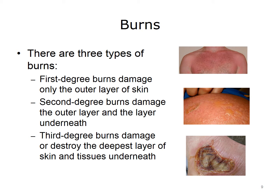Third degree burns damage or destroy the deepest layer of skin and tissues underneath. These burns are also called full thickness burns, since they involve all three layers of skin — epidermis, dermis, and fat layer. Usually the sweat glands, hair follicles, and nerve endings are destroyed as well. Third degree burns are not painful because the nerves have been destroyed. The skin becomes leathery and may be white, black, or bright red. The burned area does not blanch when touched, and hair can easily be pulled from the roots without pain.